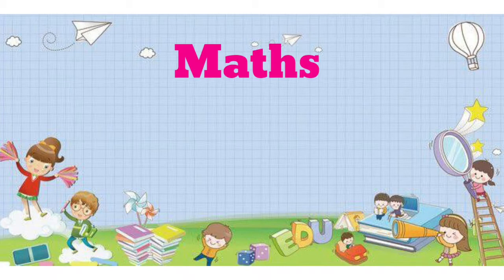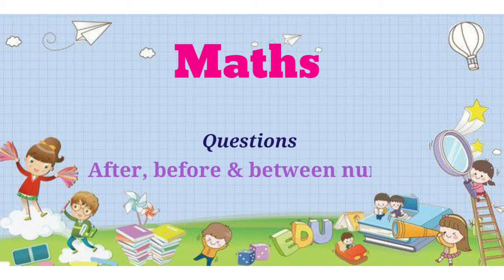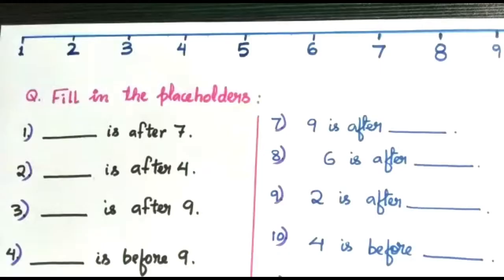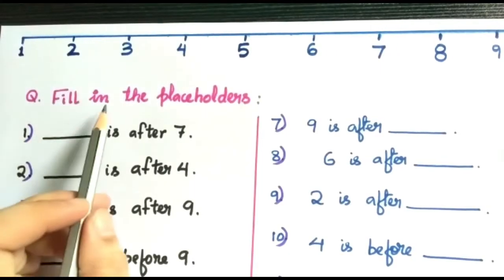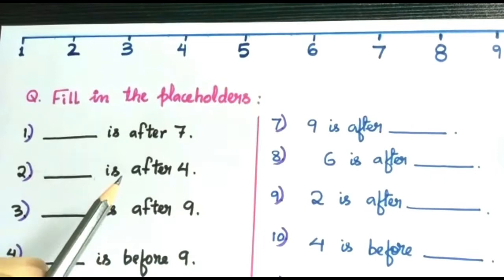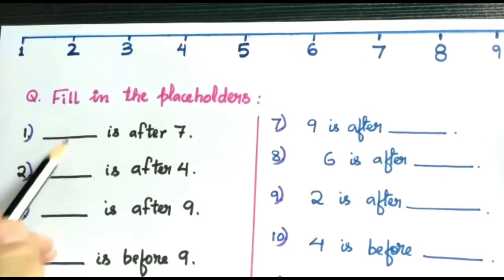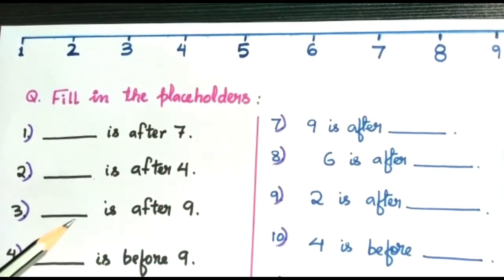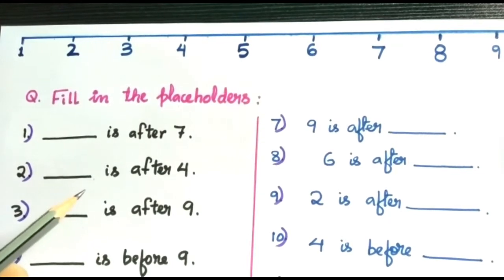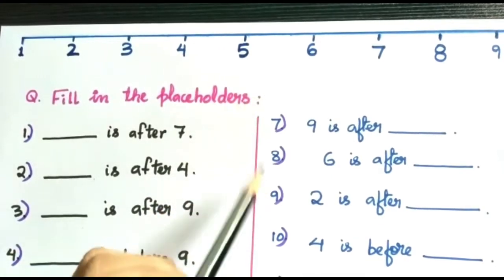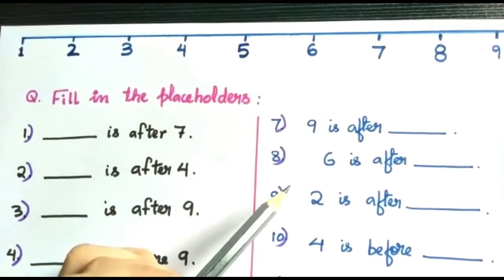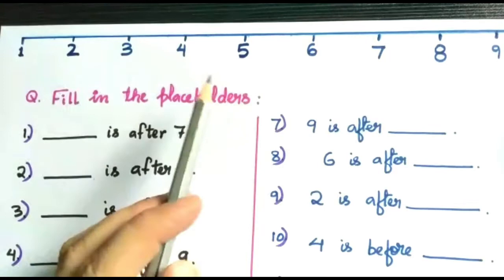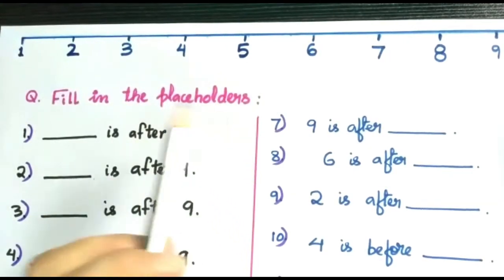Hello children, this is our maths class. Today in maths we will try to solve some questions related to after, before, and between numbers. Fill in the placeholders. Children, here we have to fill in the placeholders. Always remember that 'after number' means forward number — matlab aage wali number — and 'before number' means backward number — matlab pehle wali number.